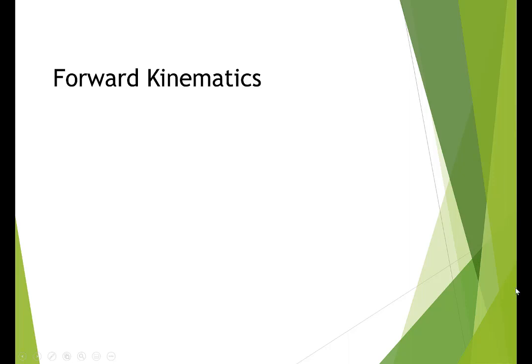Hello, everyone. Welcome to another robotics session. So far, we talked about how we can demonstrate motion of an object in 3D space using rotation matrices and homogeneous transformation matrices. And today, we're going to talk about how we can use that to model robots, and the main concept of forward kinematics — a model that gives us the end effector position for a robot as a function of its joint angles or translation.